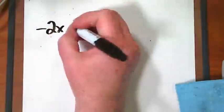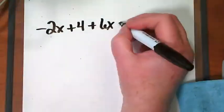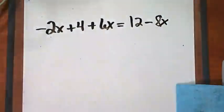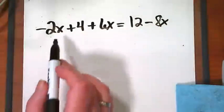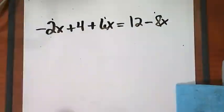Negative 2x plus 4 plus 6x equals 12 minus 8x. This is our first equation that we've seen this year where we've got x's on the left side of the equation and an x on the right side of the equation. This and this and this are all like terms. We've got two of them on the left of the equation, one on the right, but before we're done they've got to get together.